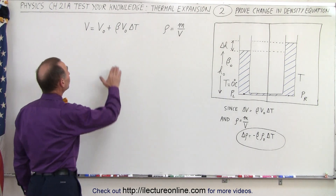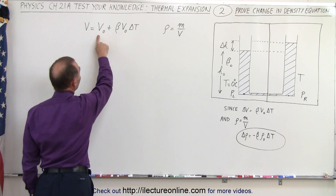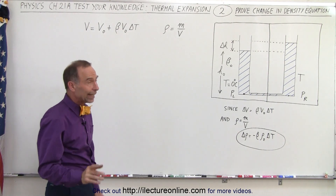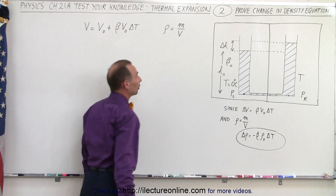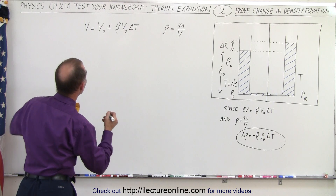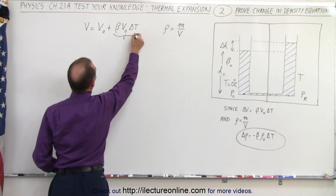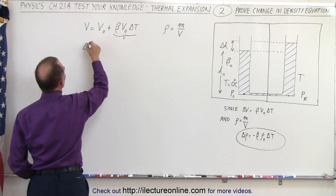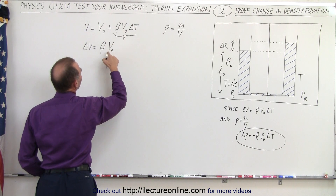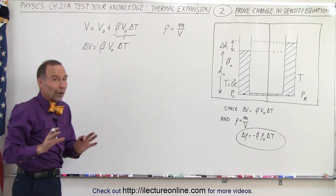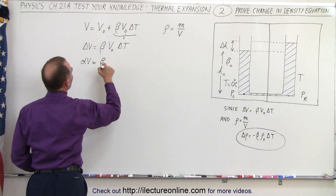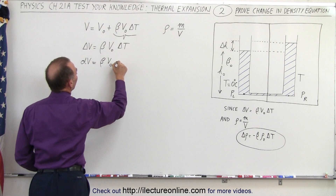In order to do so, we need to start with our two basic equations: the new volume equals the original volume plus the volume expansion coefficient times the original volume times the change in temperature, and that density equals the ratio of mass over volume. Taking the left equation, we can see that the change in volume is expressed by that portion, so dV equals the expansion coefficient times the volume times dT.